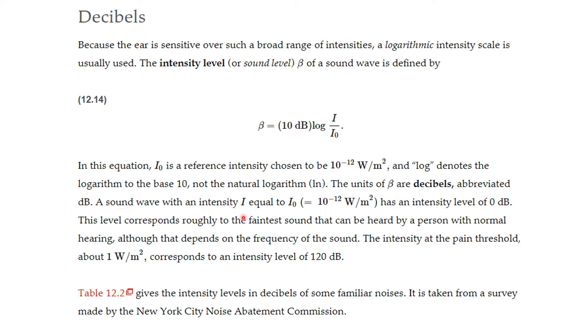A sound wave with an intensity i equal to i0 equal to 10 to the minus 12 watts per square meter has an intensity level of zero. So zero corresponds to, this is going to be i0, so that's the log of one, which is a zero. That's what makes this zero. So this is the intensity. Zero dB is the threshold of sound. This level corresponds roughly to the faintest whisper. This is the threshold of sound that can be heard by a person with normal hearing, although that depends on the frequencies of the sound. The intensity at the threshold of pain is about one watt per square meter, and that corresponds to an intensity level of 120 dB.